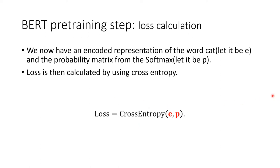Here we have an encoded representation of the word 'cat' — let it correspond to E — and a probability matrix from a softmax, let it correspond to P. Loss is then calculated using categorical cross-entropy, where loss is equal to the cross-entropy of P and E over P.